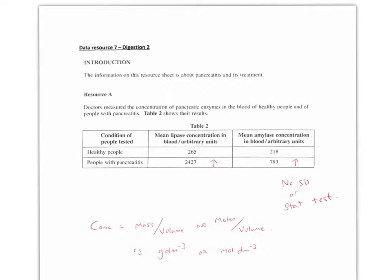Question two, suitable units for lipase concentration? Well, really, you want a mass divided by a volume, so something like grams per decimeter cubed, so decimeter cubed is a volume, grams is a mass. Or you could have moles divided by volume, so for example moles per decimeter cubed.